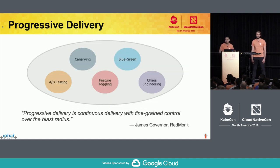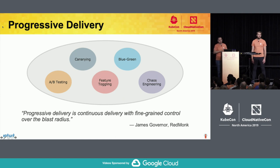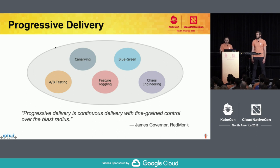Updates are the most critical points in time where you need the most observability, confidence, and a contingency plan for when things go wrong. Developers started using new and old techniques to deliver software with less risk — things like canarying, blue-green, feature toggling, and A/B testing. The term progressive delivery was coined by analyst James Governor, who describes it as continuous delivery with fine-grained control over the blast radius.